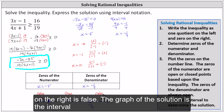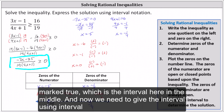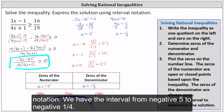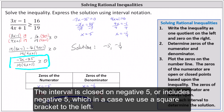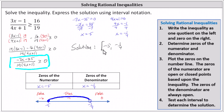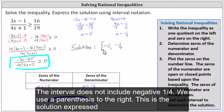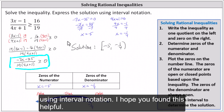The graph of the solution is the interval marked true, which is the middle interval. Using interval notation, we have the interval from negative five to negative one fourth. The interval is closed on negative five, so we use a square bracket to the left. The interval does not include negative one fourth, so we use a parenthesis to the right: [-5, -1/4). This is the solution expressed using interval notation.